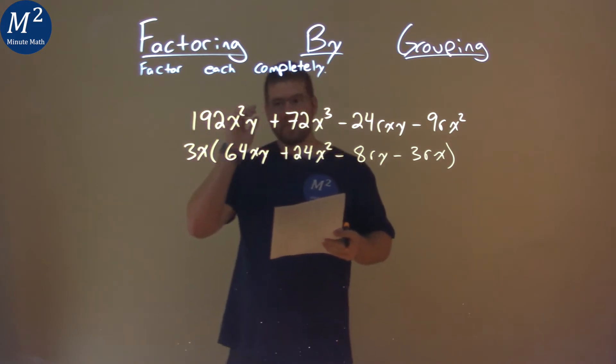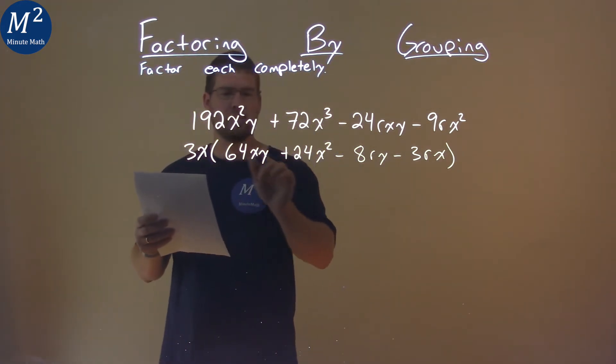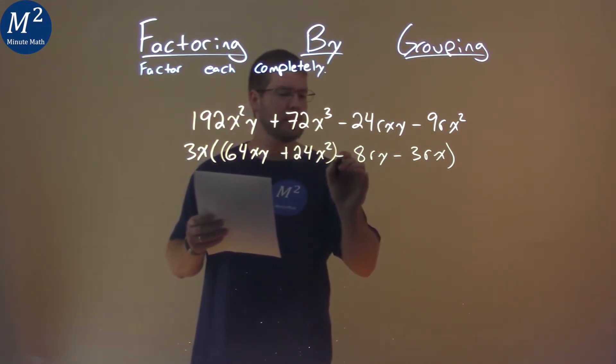Okay, so we pulled out the 3x there from every single part. Now we're going to group the first two terms inside the parentheses and the second two terms.